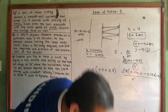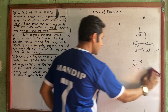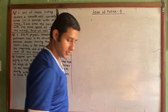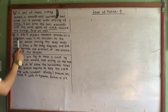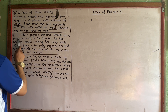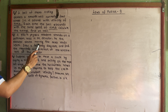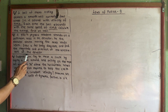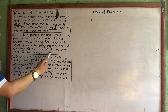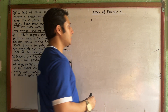Now let me read the next question. A 550 Newton physics student stands on a bathroom scale in an elevator. As the elevator starts moving, the scale reads 450 Newton. Draw a free body diagram and find the magnitude and direction of the acceleration of the elevator.